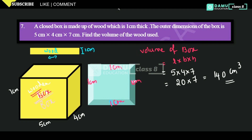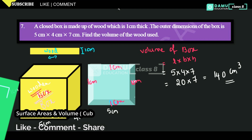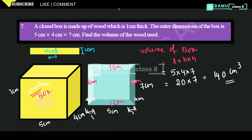Now what are the inner dimensions? The outer length is 5 centimeters, breadth is 4 centimeters, height is 7 centimeters. We need to subtract the wood thickness from both sides. From length: subtract 1 centimeter on each side, so 5 minus 2 equals 3 centimeters. From breadth: 4 minus 2 equals 2 centimeters. From height: 7 minus 2 equals 5 centimeters.